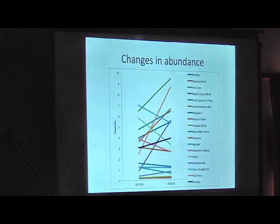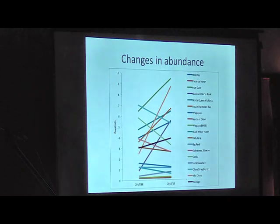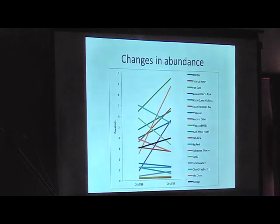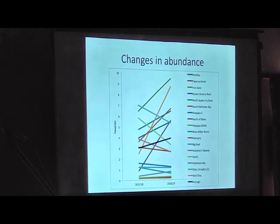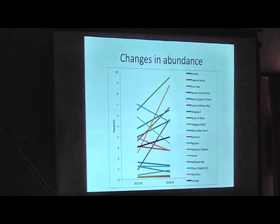This is probably going to be the main figure that I talk to, and I'll try to keep it as simple as possible to explain. What this shows is the change in abundance across our individual sites over these two time periods, from baseline to last summer. On the y-axis here, this is a really crude breakdown of abundance — basically the average number of pāua encountered by our divers over a survey period.